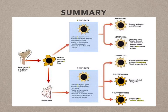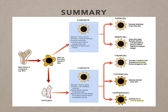In summary, lymphocytes are made in stem cells in the bone marrow. T lymphocytes mature in the thymus gland and are involved in cell-mediated immunity, including T helper cells, T cytotoxic cells, and T suppressor cells. B lymphocytes form plasma cells and memory cells, and the plasma cells are the ones that secrete antibodies. And that concludes the lesson.